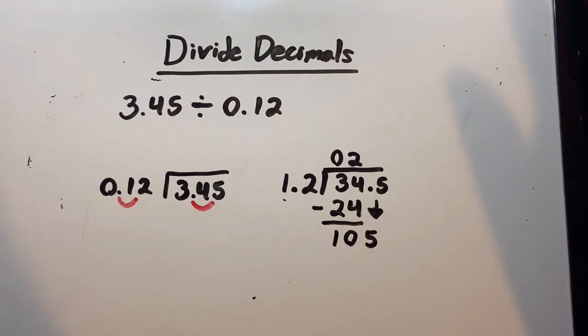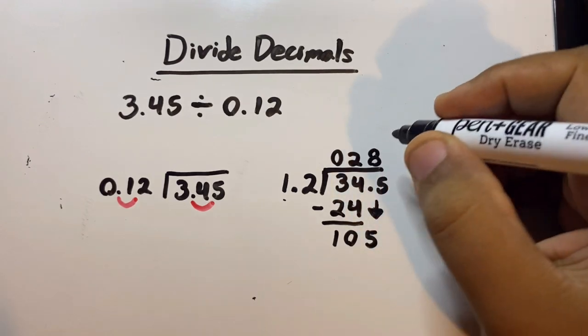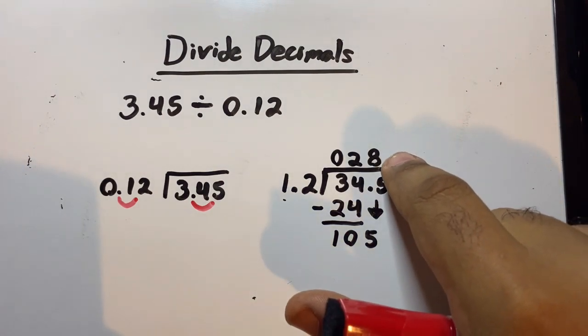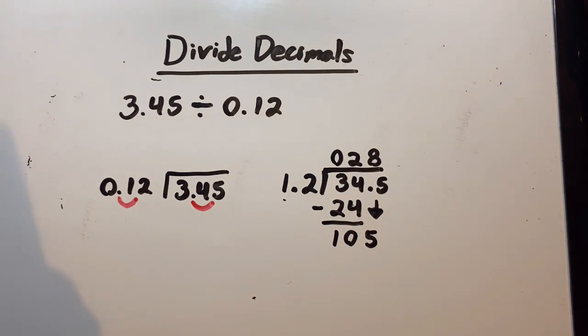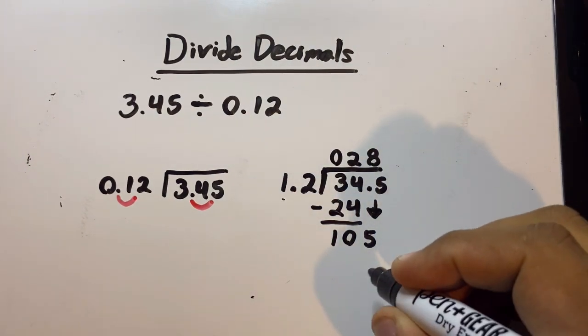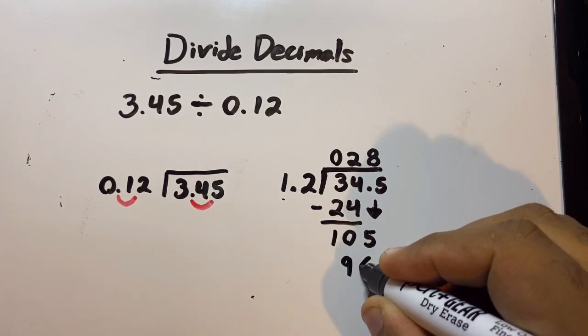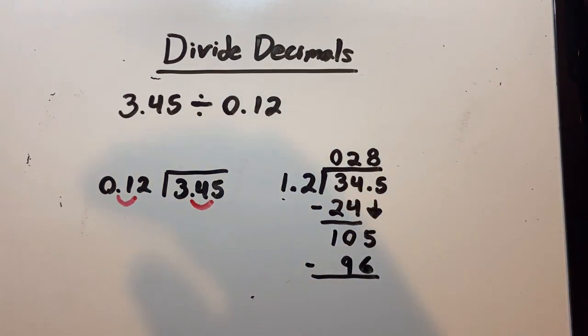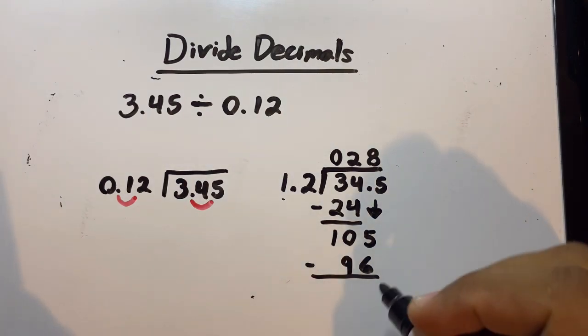If you know your multiplication tables, the answer is 8. At this point, you're probably asking, when do I put the decimal point? Don't worry about the decimal point yet—there's a trick for that. So now we're going to do 8 times 12, and 8 times 12 is 96. And then we're going to subtract: 105 minus 96 is 9.